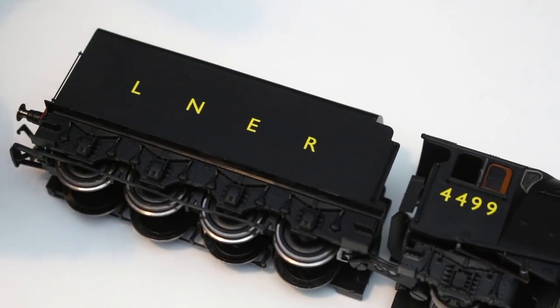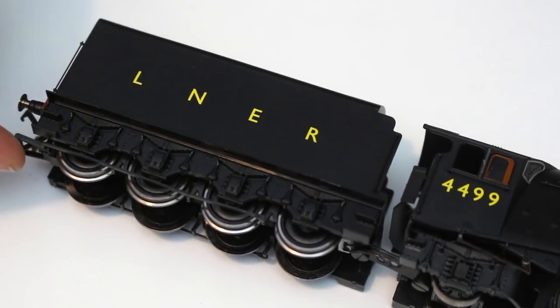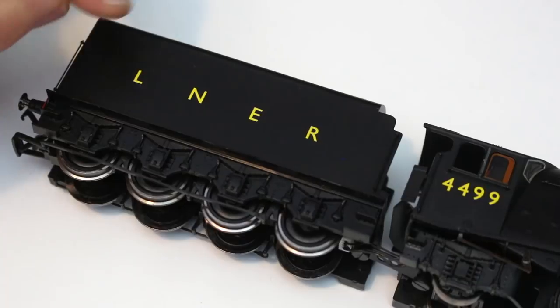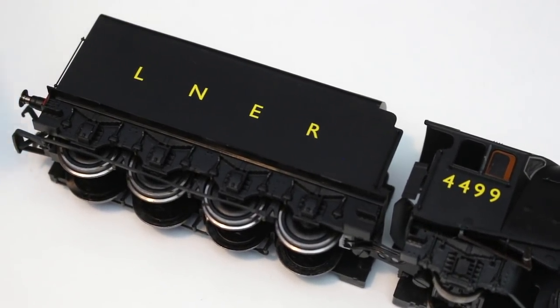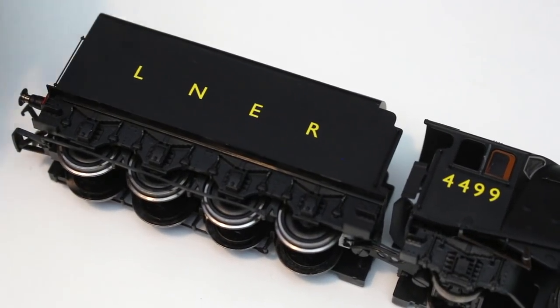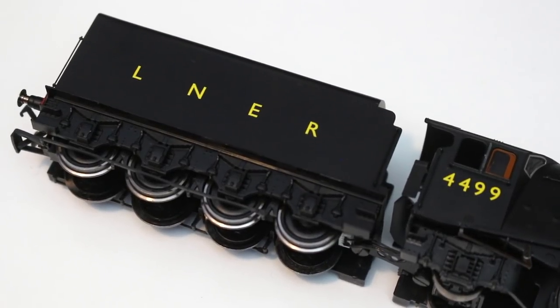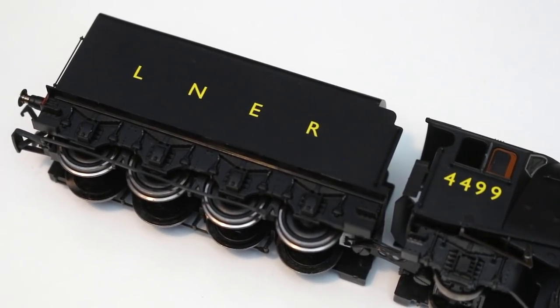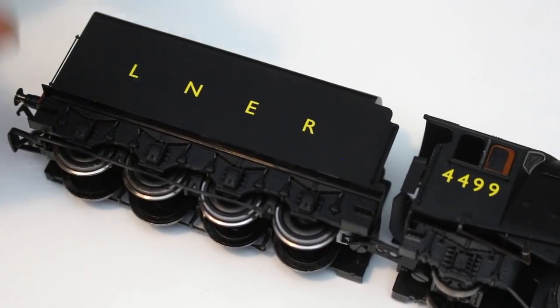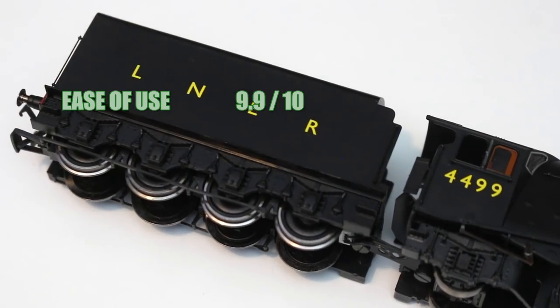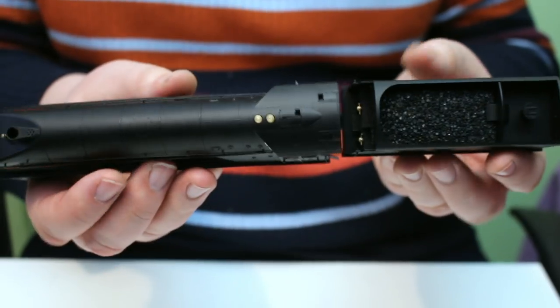Ease of use, well for me a lot of this comes down to how easy it is to DCC fit this and this is one of the easiest models that there is on the market. Single screw, unclip the tender top and in you are. It's all set up ready for that to be chipped. In this day and age all too often we see locomotives where there hasn't been a lot of thought into actually how the DCC chipping will take place but Hornby have designed this to be as easy as possible so I'm going to give this a 9.9 out of 10.